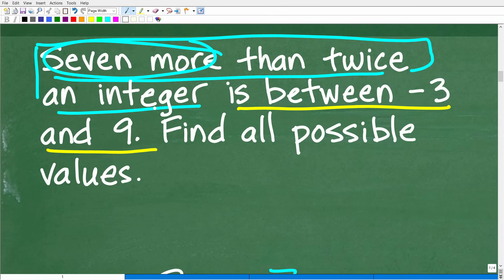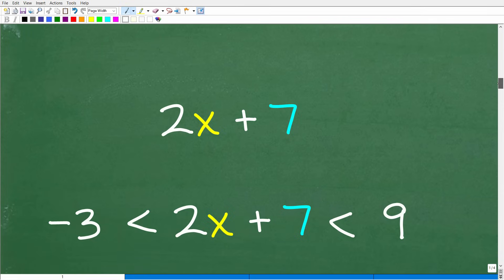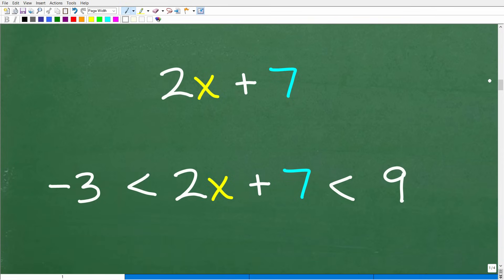Seven more than twice an integer is between - so this, whatever this is, is between these numbers, negative 3 and 9. We're going to set up an inequality now. So 2x plus 7 is between negative 3 and 9. Negative 3 is going to be over here, and 9 is going to be over here. At this point, what we need to do is solve this compound inequality.